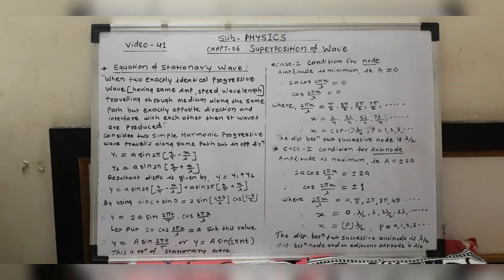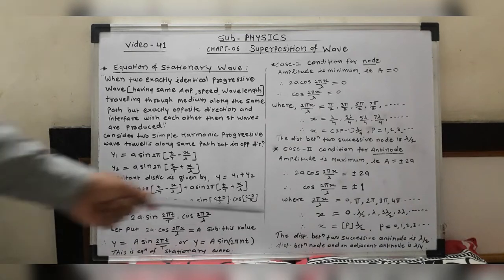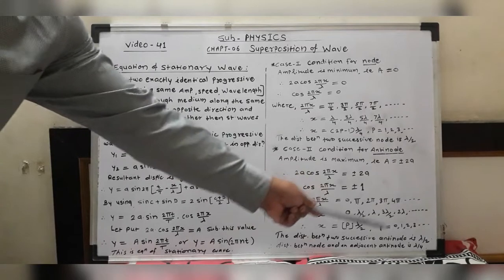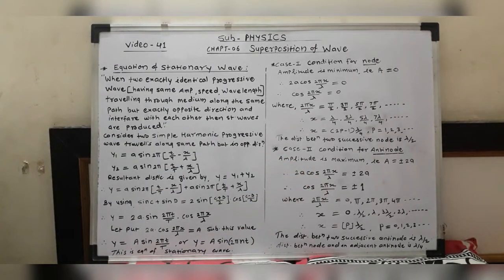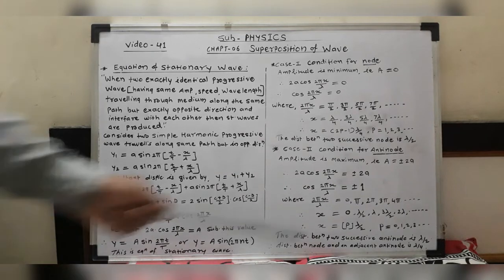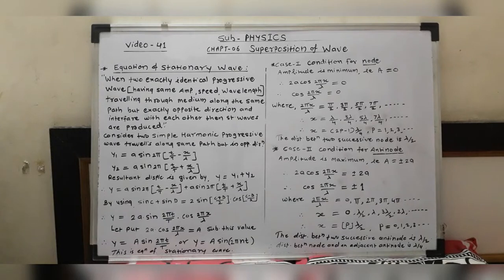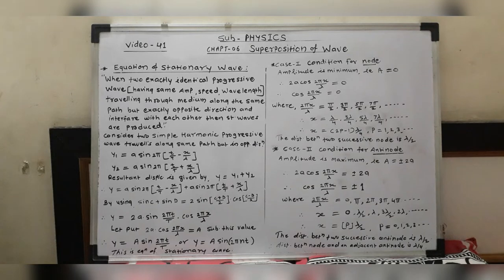In summary, the distance between two successive nodes or anti-nodes is always λ/2. However, the distance between a node and its adjacent anti-node is λ/4. Remember this for numerical problems. This completes our discussion of the equation of stationary waves. Thank you.